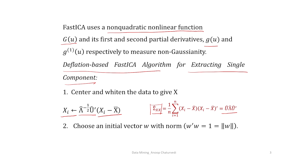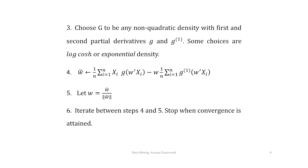Then we choose an initial vector w with norm 1, i.e., w^T w = ||w|| = 1. We choose G to be any non-quadratic density whose first and second partial derivatives exist, denoted g and g1 respectively. Some choices include the log cosh hyperbolic function or the exponential density.